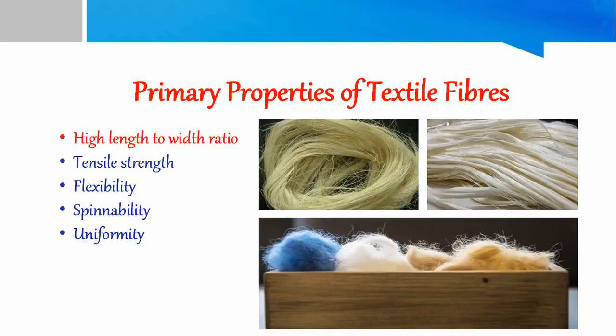What is length to width ratio? A basis for processing of fibers into yarns and fabric is that their length must be more than their width. The minimum length to width ratio is 100 to 1, which means the length of the fiber alone should be at least 100 times the width of the fiber.